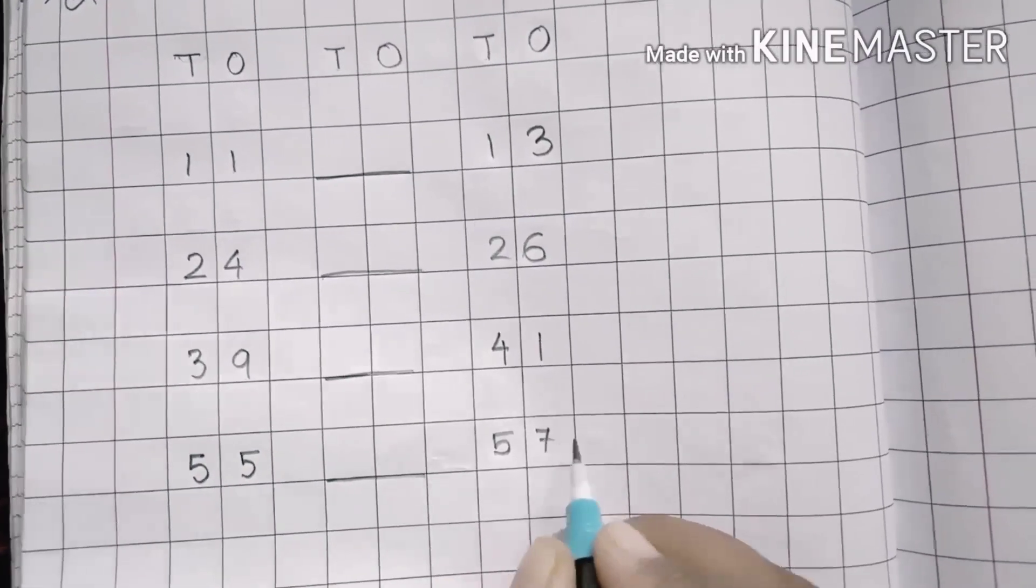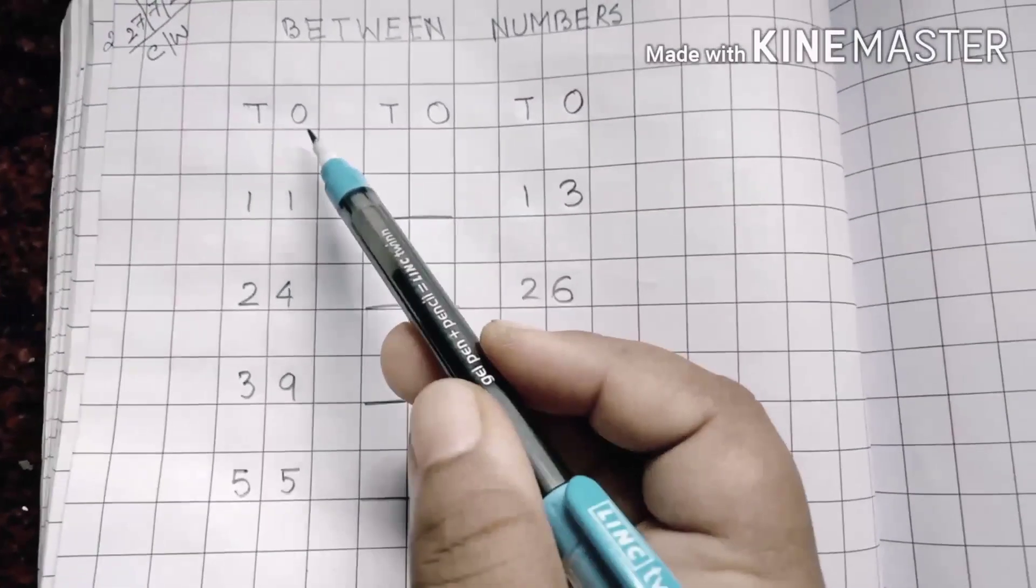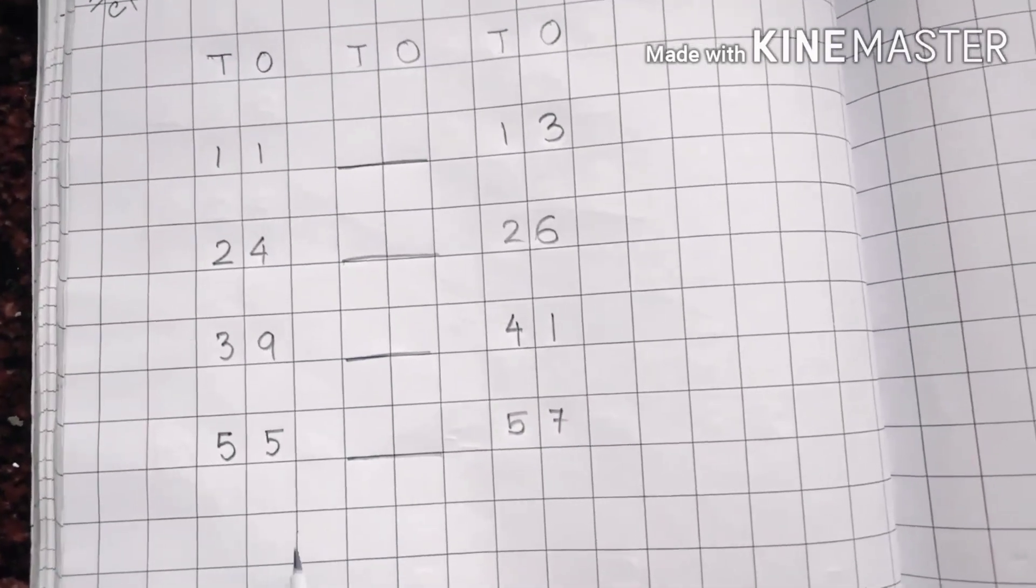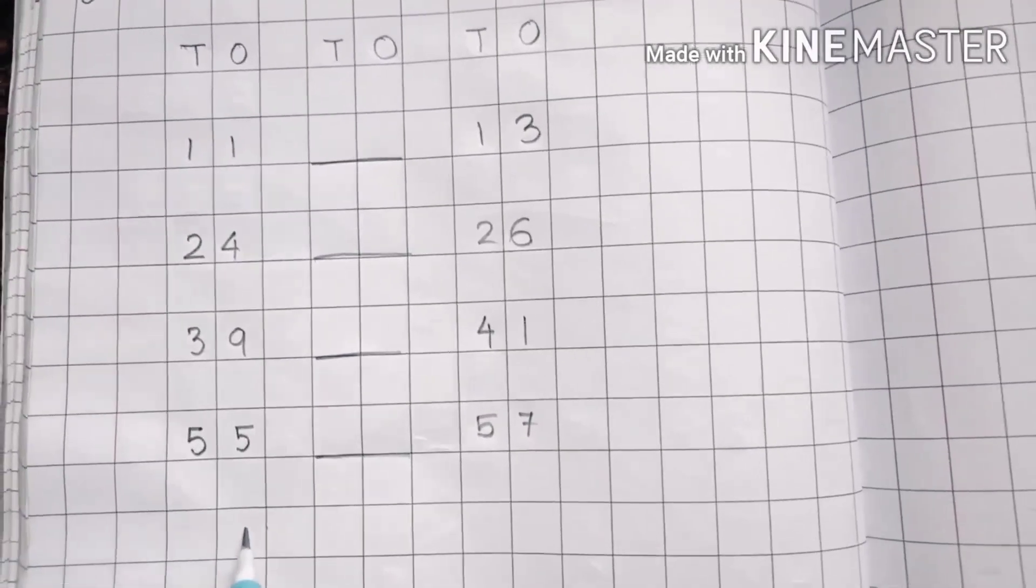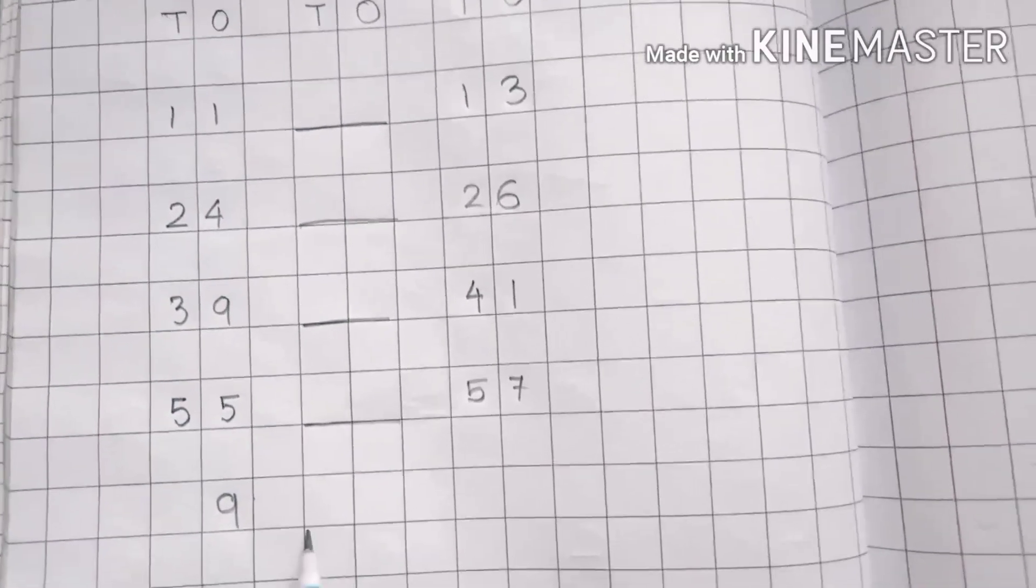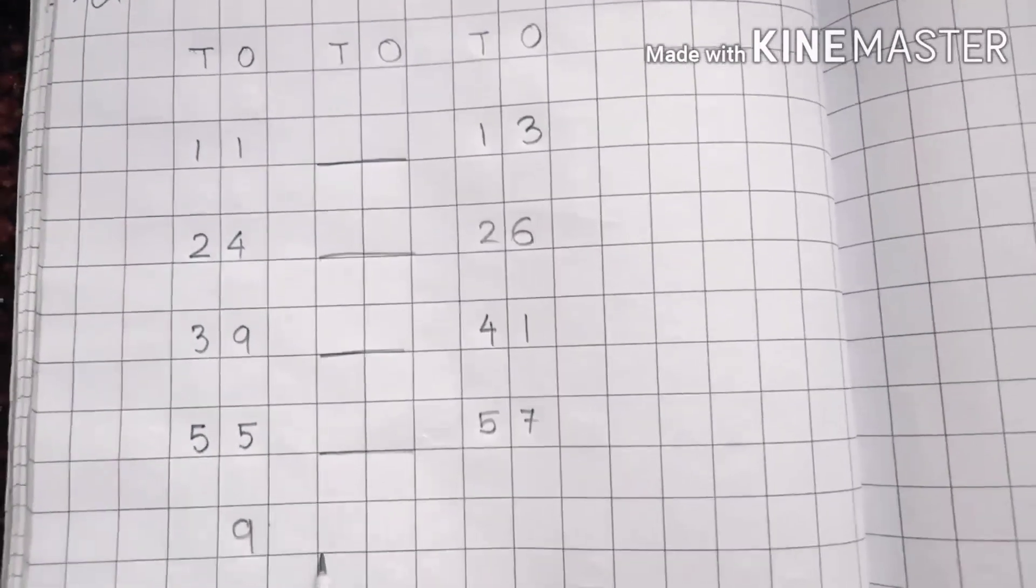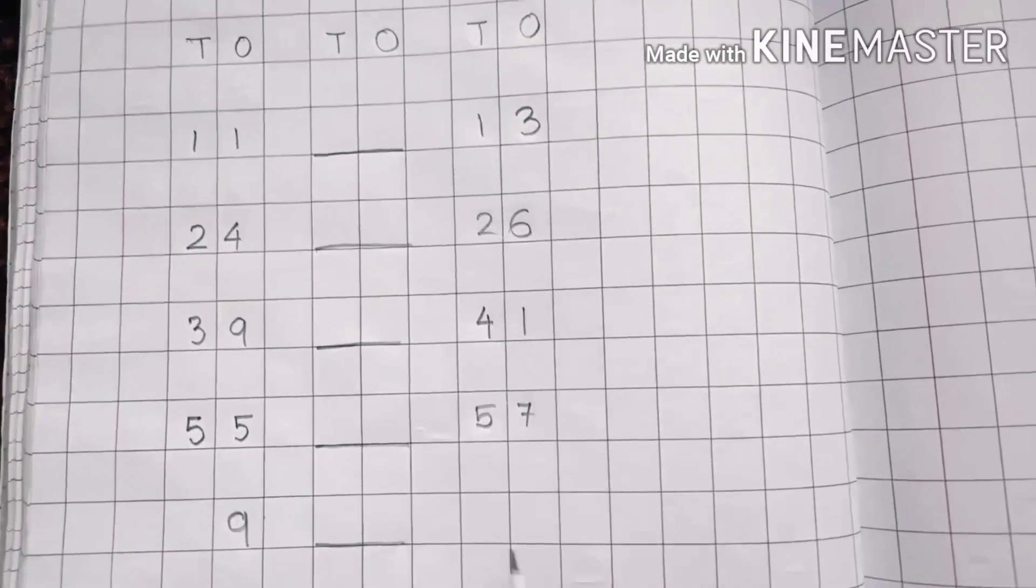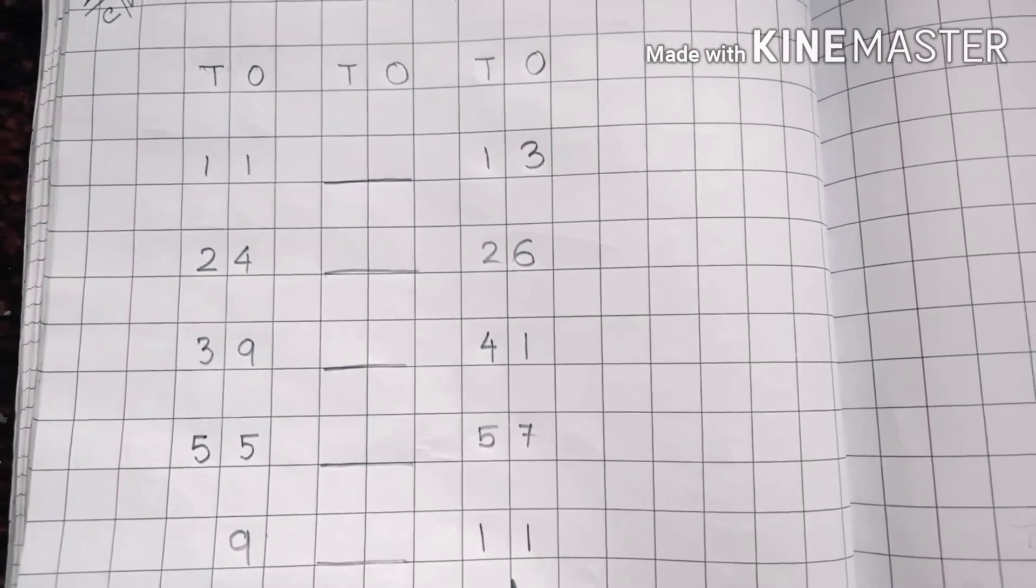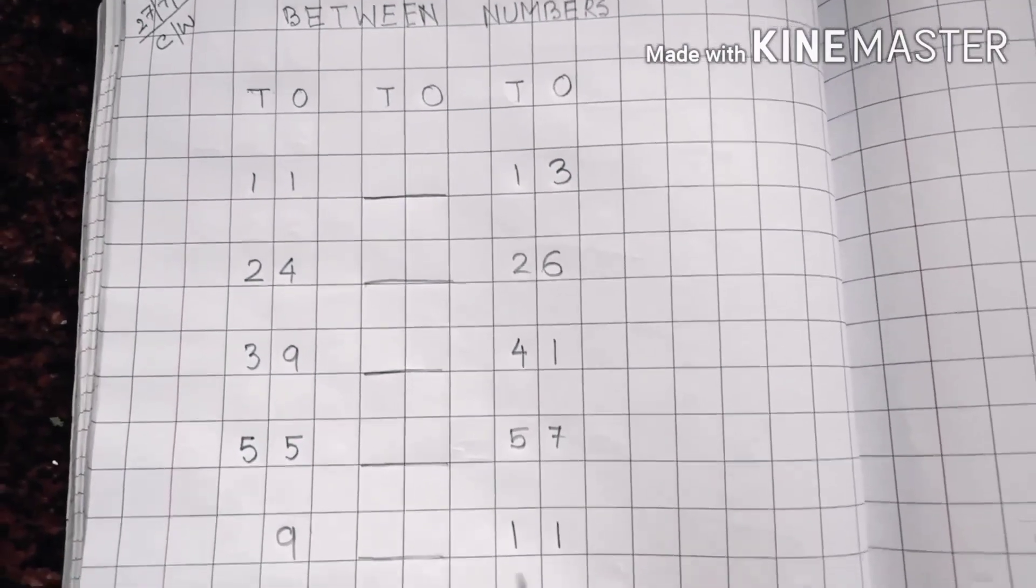You will always follow the ones and tens concept. So we write here the number 9, 9 - 99, give a dash like this, yes, then write here 1, 1 - 11. So you have to guess children which number will come in between 9 and 11. There comes the next number.